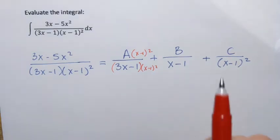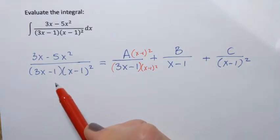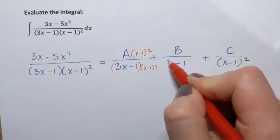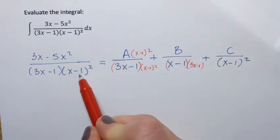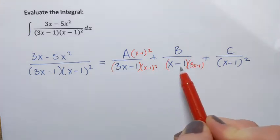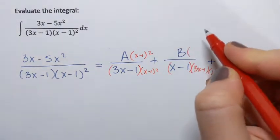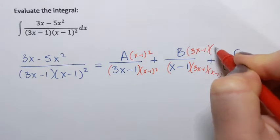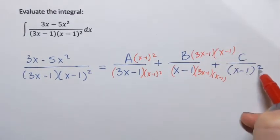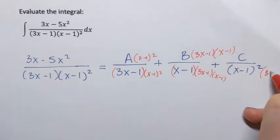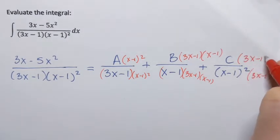The second fraction has (x minus 1), so it's missing (3x minus 1) and also one more (x minus 1) to reach the squared term in the LCD. So its numerator is multiplied by (3x minus 1)(x minus 1). Finally, the last fraction has (x minus 1) squared, so it's only missing (3x minus 1), and its numerator is multiplied by (3x minus 1) as well.